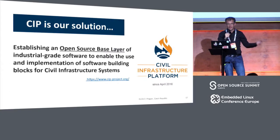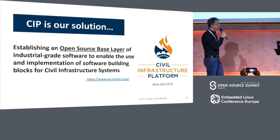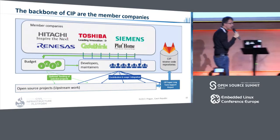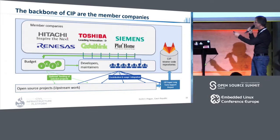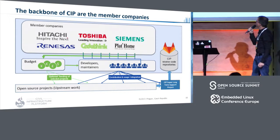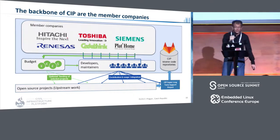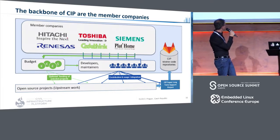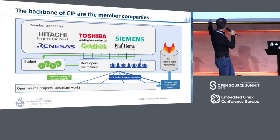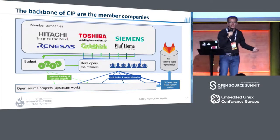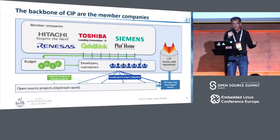What came out in April 2016 — one and a half years ago — was that we founded the Civil Infrastructure Platform. The current participants are Hitachi, Toshiba, and Siemens, who have roughly the same product portfolio in many areas. We have Renesas as the first silicon vendor, who uses the CIP platform as a reference platform. We have CodeSync with a lot of open-source expertise, and Plathome coming from the industrial IoT side. All these companies provide people participating in activities, and also a little money, which gives us the freedom to fund related projects and maintainers.